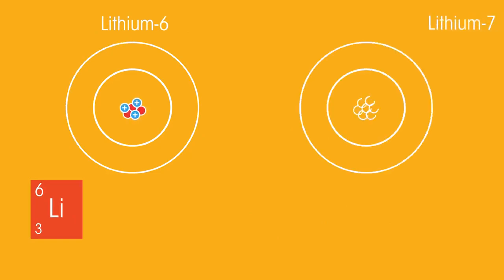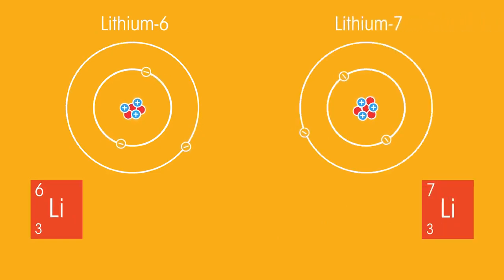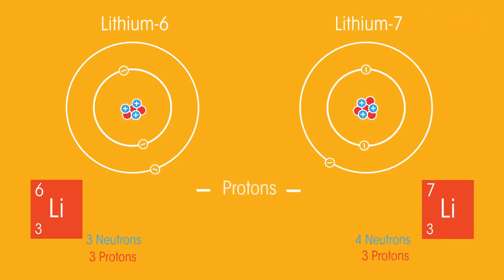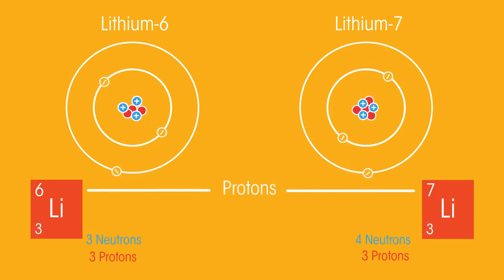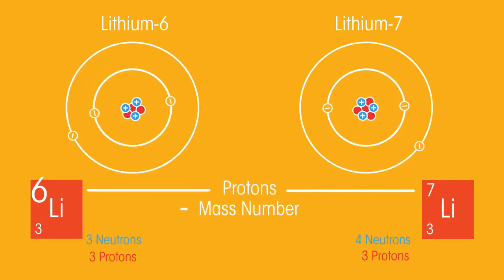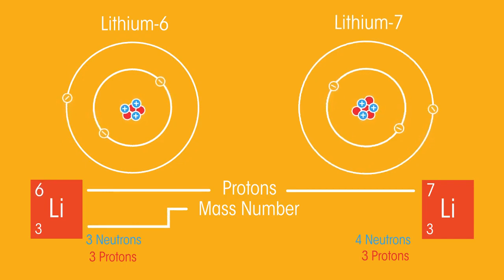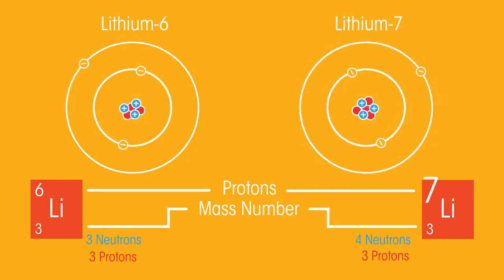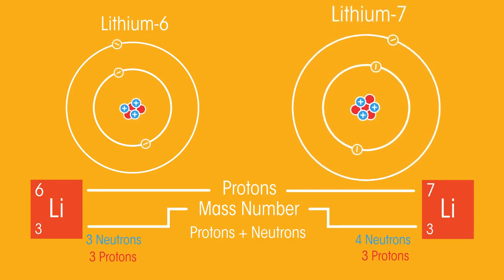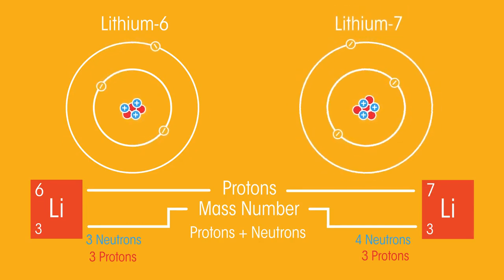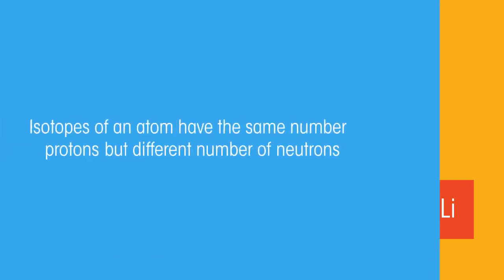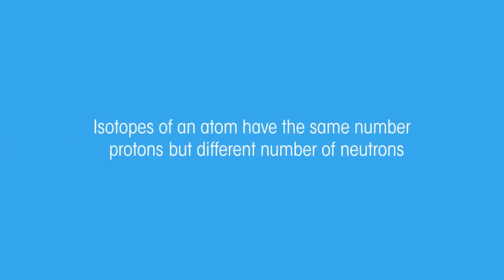Lithium-6 and lithium-7 are both stable lithium atoms. Because they both have three protons, they are both lithium atoms. But this one has a mass number of six, and this has a mass number of seven. The difference in mass numbers is because this one has one more neutron in its nucleus. These different forms are called isotopes. So isotopes of an atom always have the same number of protons, but different numbers of neutrons.